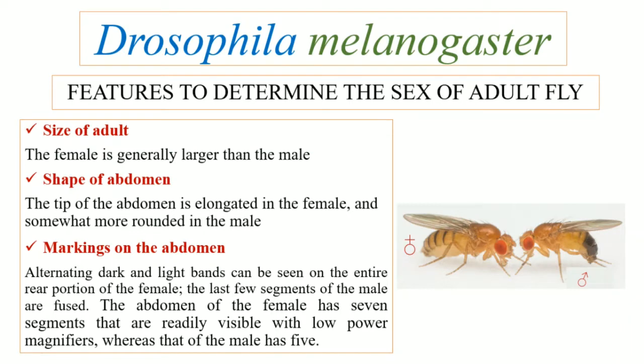Shape of the abdomen. In case of females, the tip of abdomen is usually elongated, and in males it is slightly rounded.